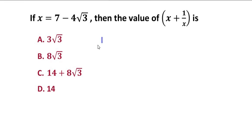So it can be written as 1 over 7 minus 4 radical 3. Now if we are having a radical term in the denominator, then we have to go for a rationalization method in which we are going to multiply the numerator and denominator with the conjugate of the given term.